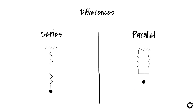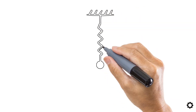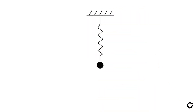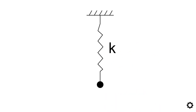Let's bring in our friend, the spring-mass system. It is clear that the stiffness of the system is the one represented by the only existing spring. Pretty easy, isn't it?